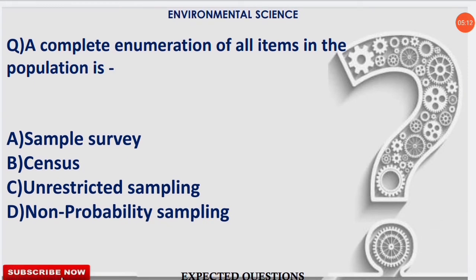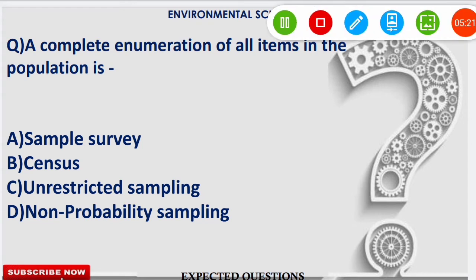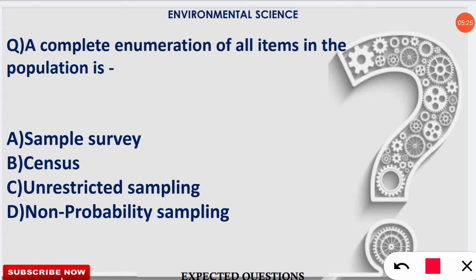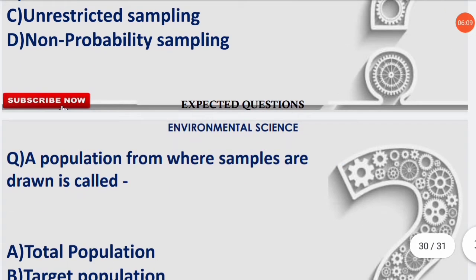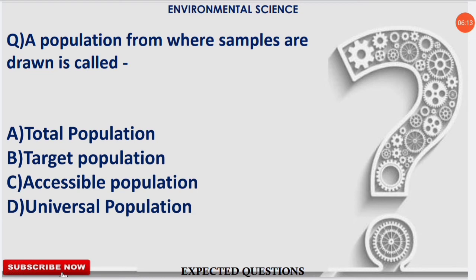The next question: a complete enumeration of all items in the population is known as what? The correct option is option B — census. If you are confused between sample survey and census: sample survey means taking a particular sample for study, for example to know about age structure or literacy rate. But if we are enumerating all items — age, sex ratio, literacy level, everything — as done in our country, that is called census of the total population.